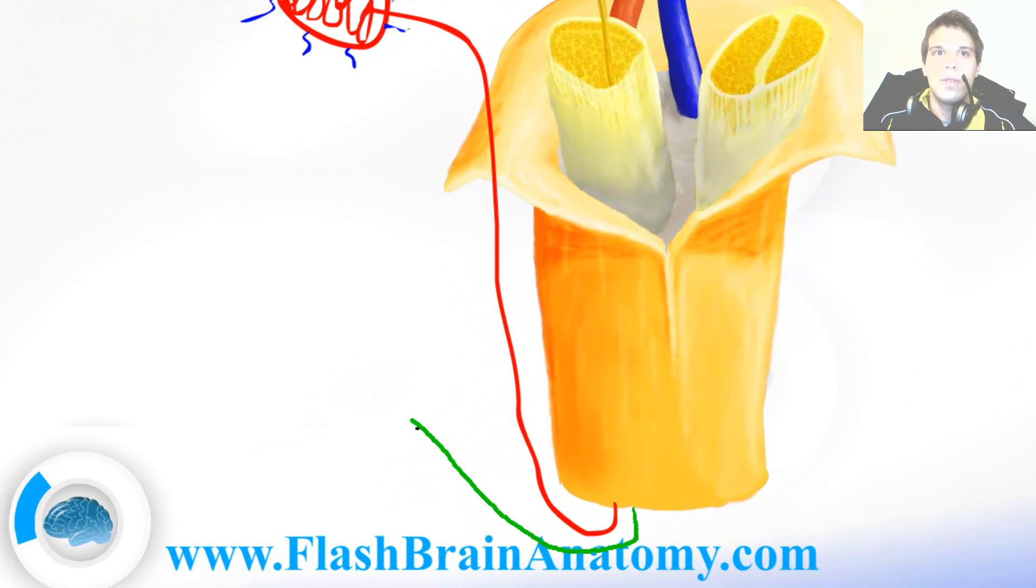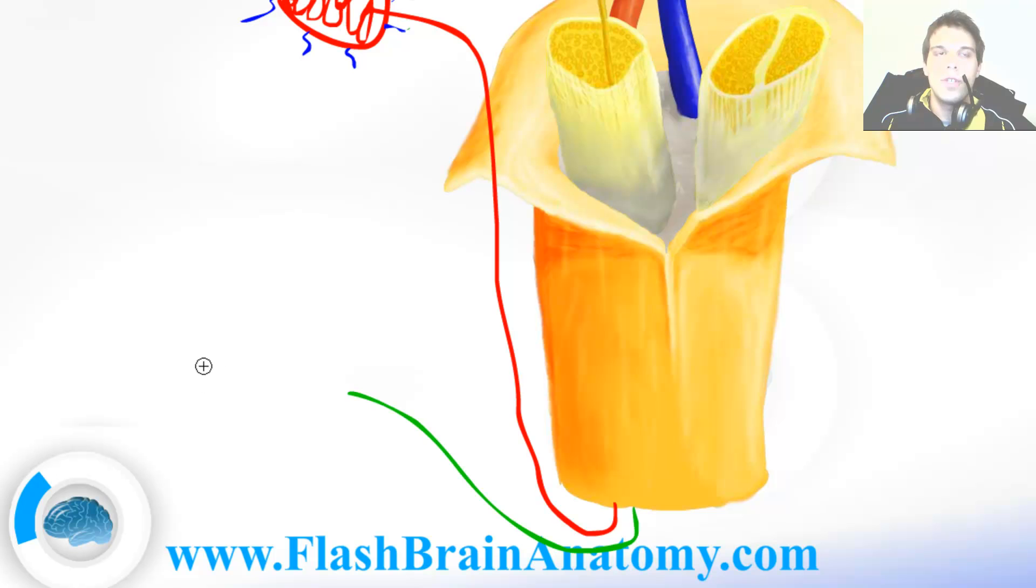Another group of receptors are the Pacinian corpuscles. They are located in the subcutis. If we make a cross section of the Pacinian corpuscle it would look something like this.